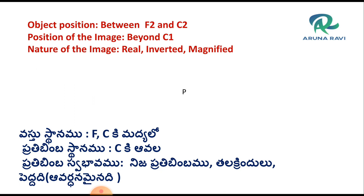Now we have to draw the ray diagram. We have to draw three points: the principal axis, the object, and the convex lens. After refraction, we extend the rays. The point on the principal axis where the normal is drawn represents the image position and size.